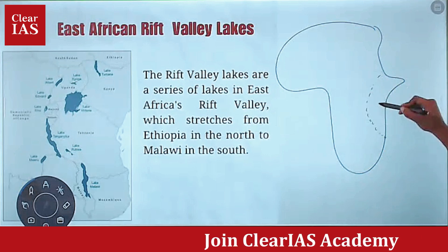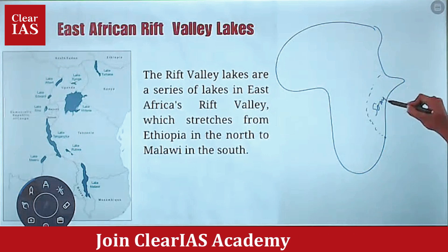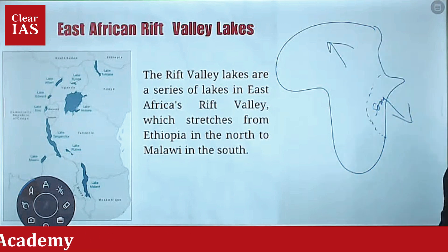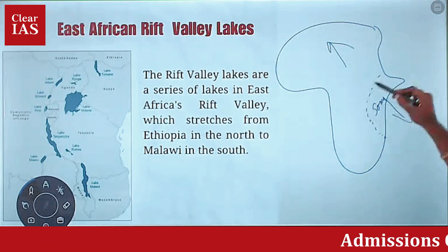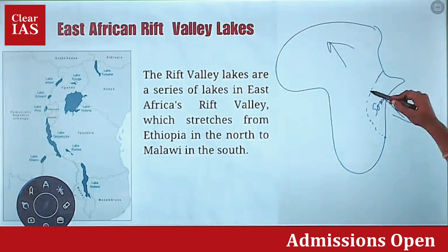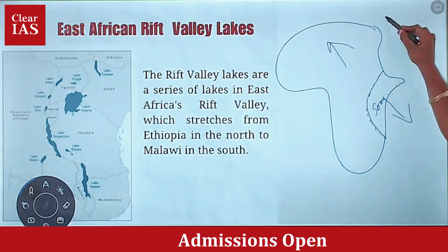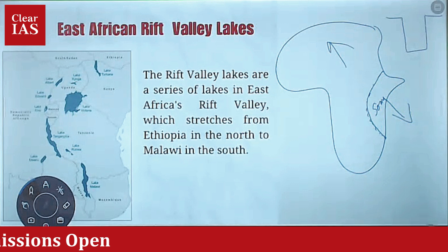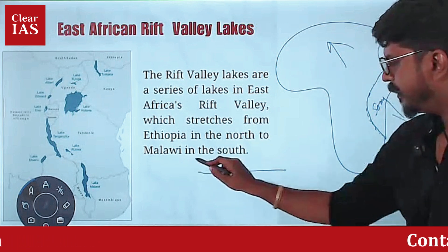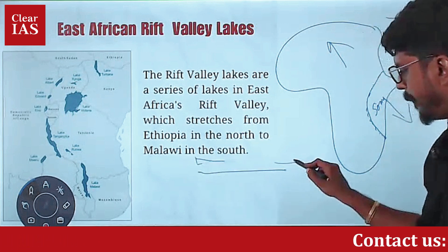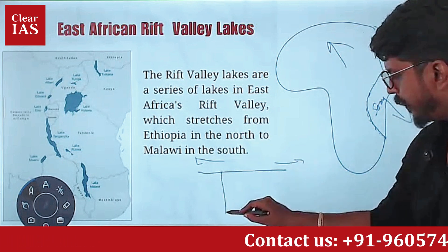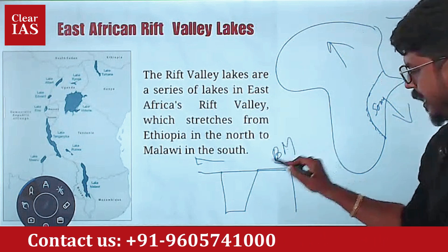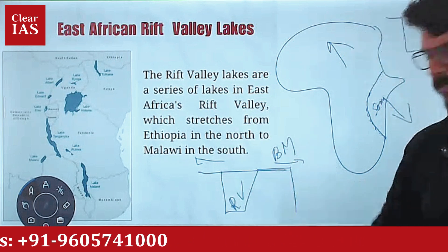The Somalian plate is moving in one direction and the African plate is moving in the other direction. So due to this divergence, there is a rift valley created here. When divergence happens, the middle part comes down, forming block mountains and rift valleys.